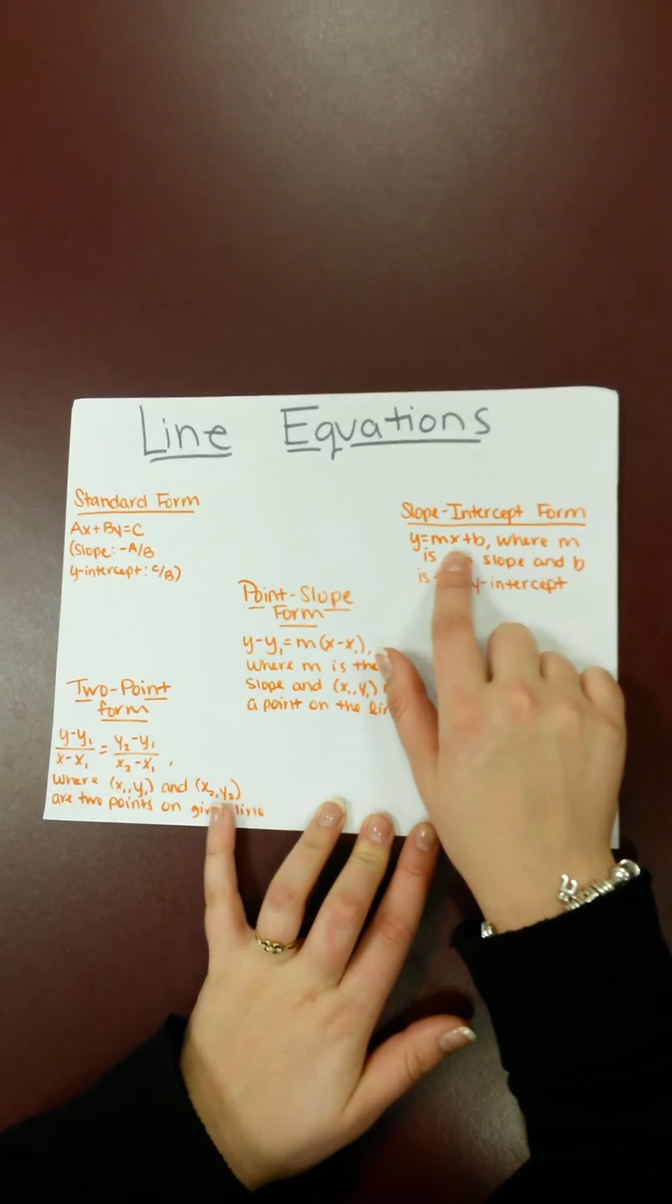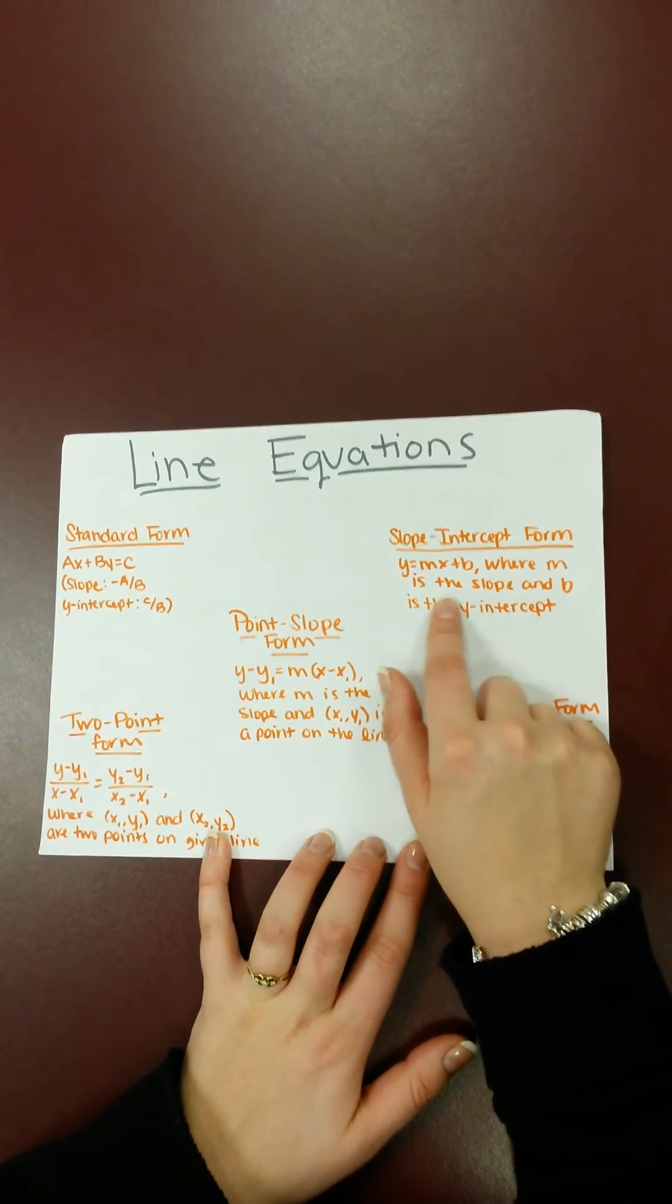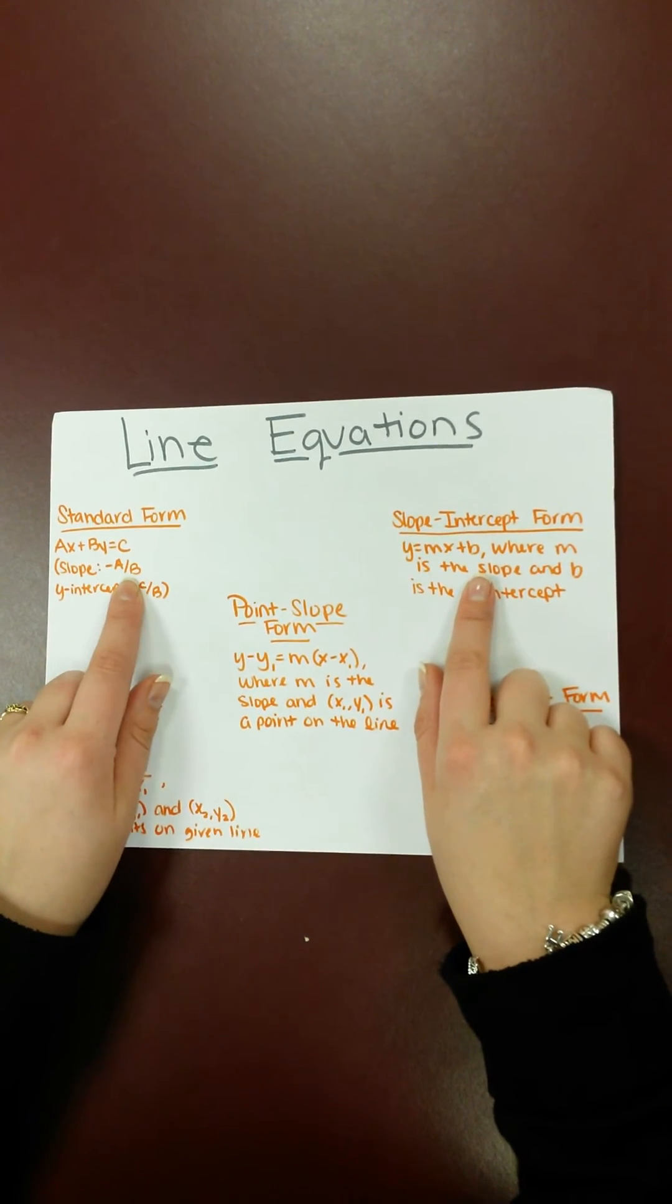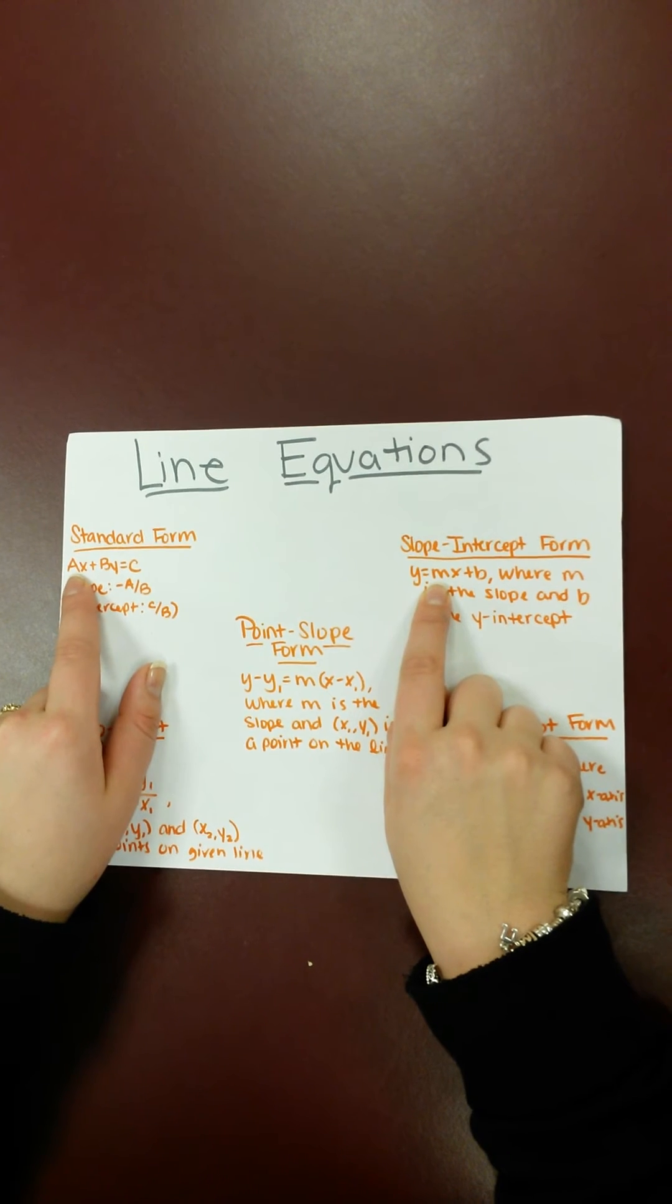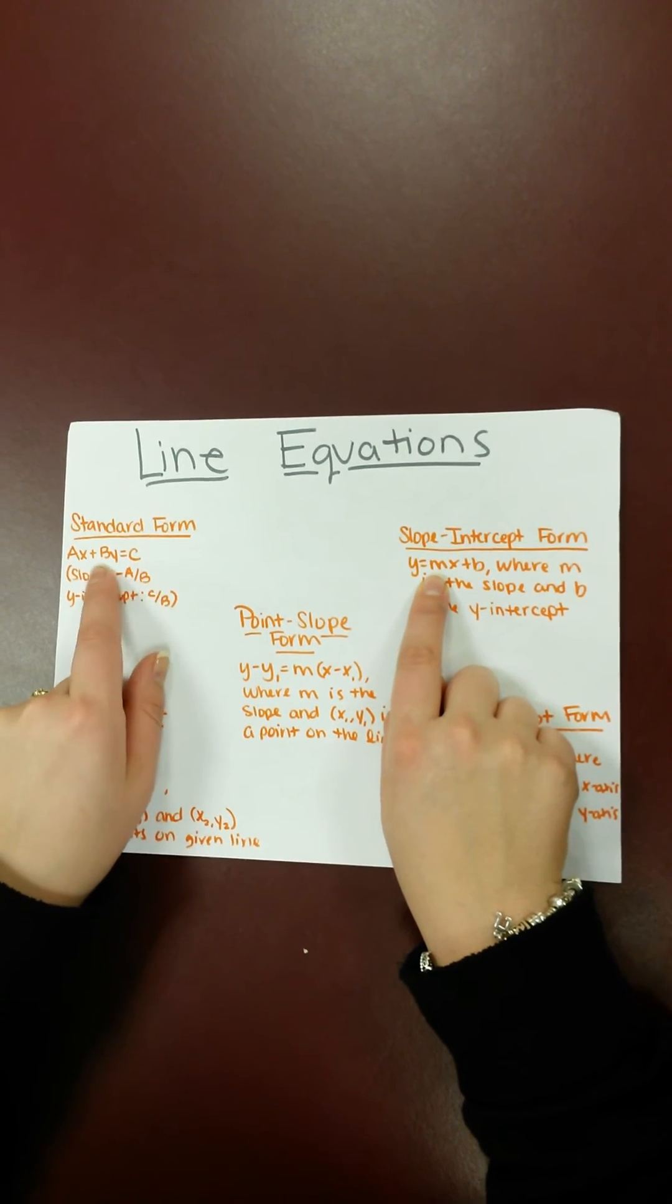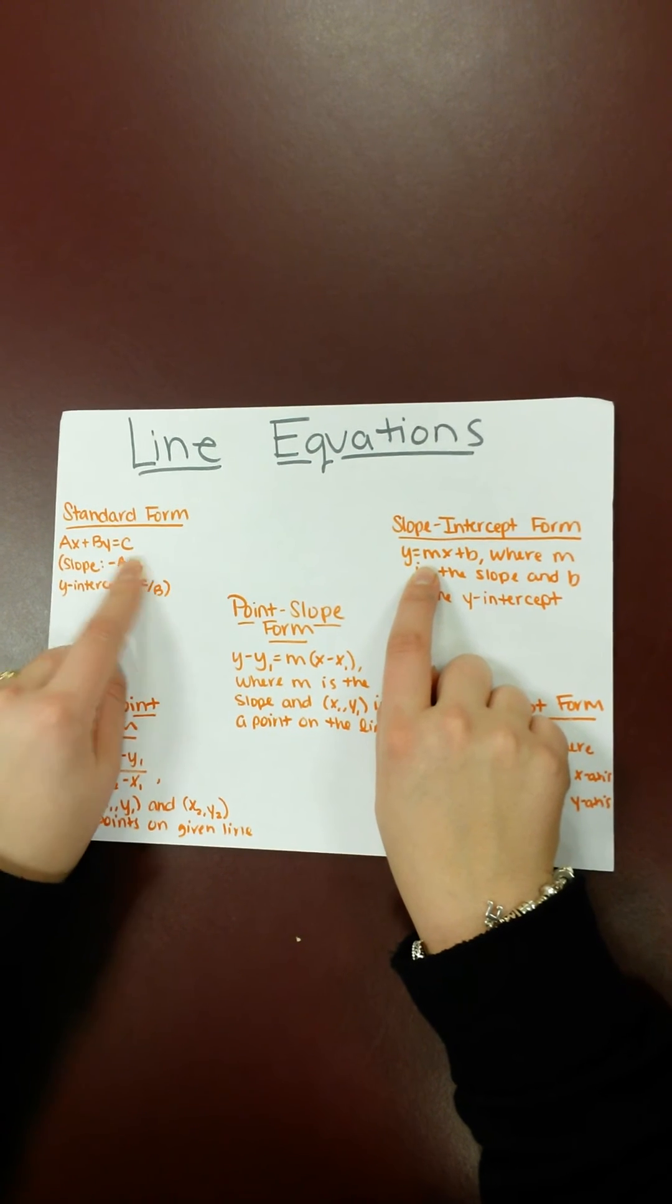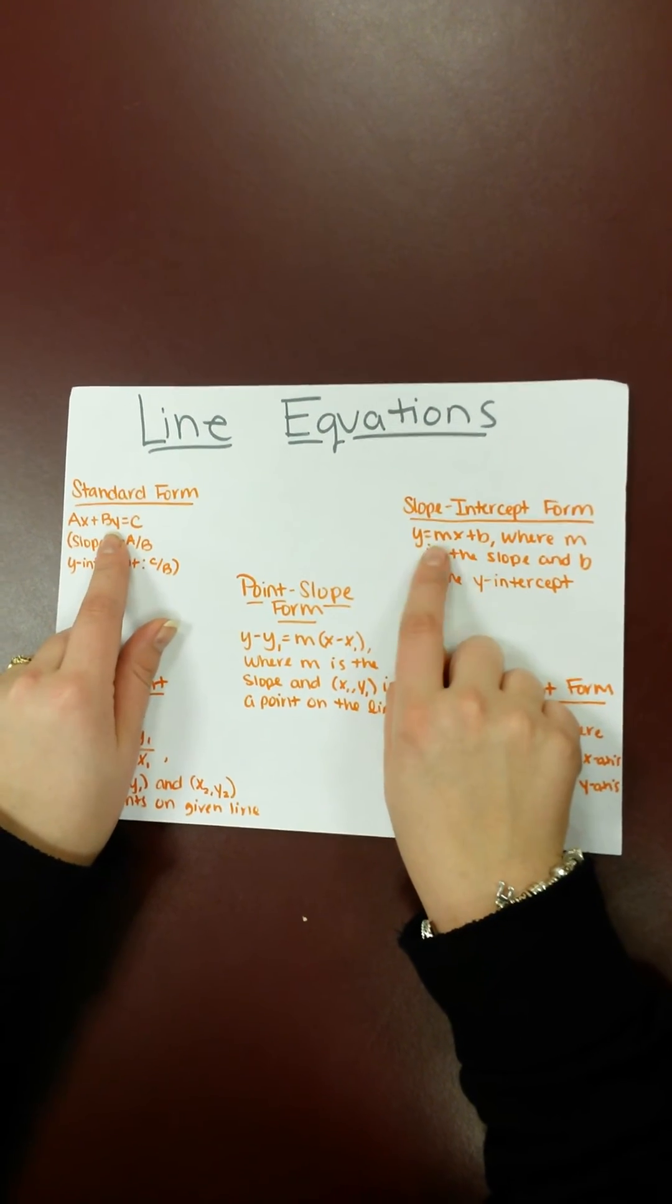The next thing is slope-intercept form, which is Y equals MX plus B, where M is the slope and B is the Y-intercept. These two can be the same, and that's where I was saying slope, because slope is M here. So to do that is where we want to subtract AX over here and then divide by B. And that's how we get that into the form of this.